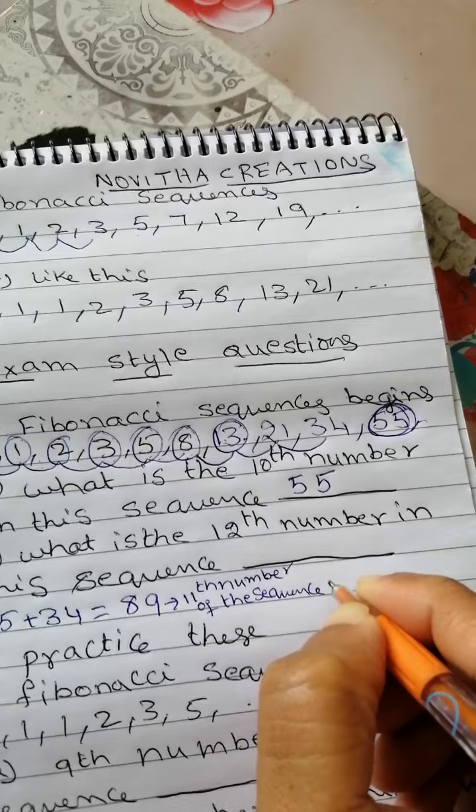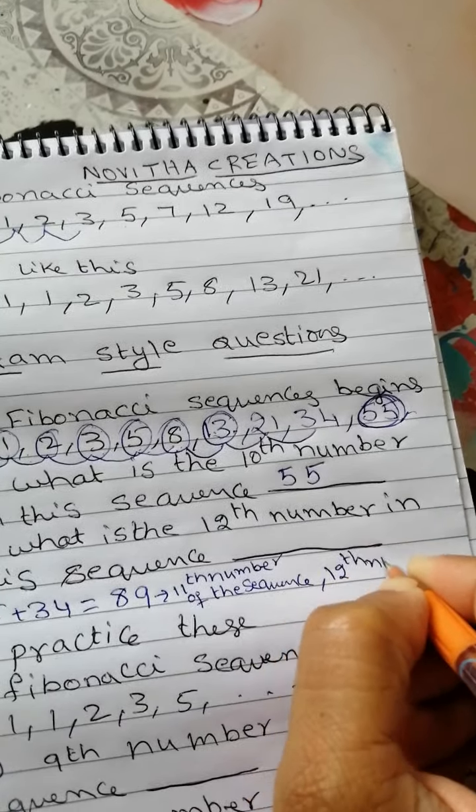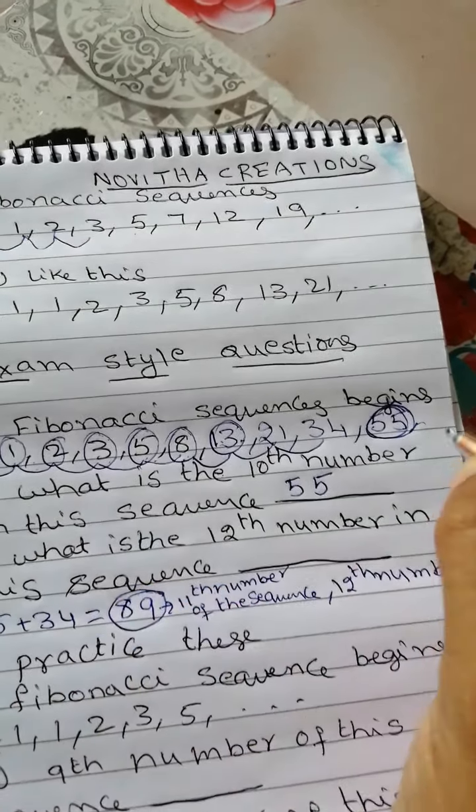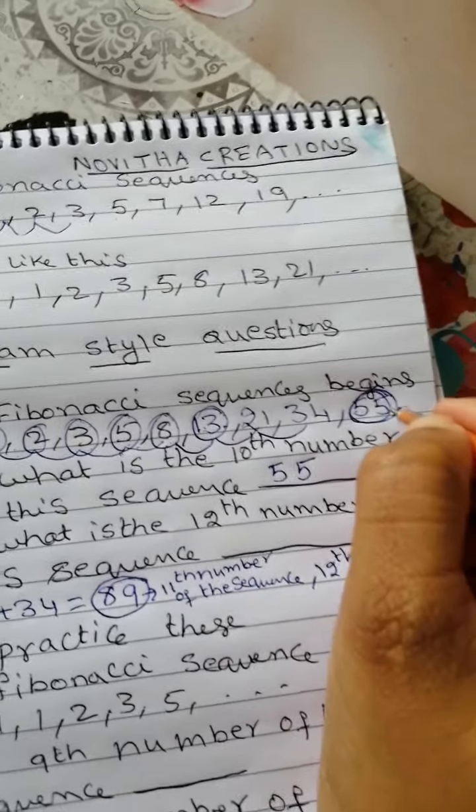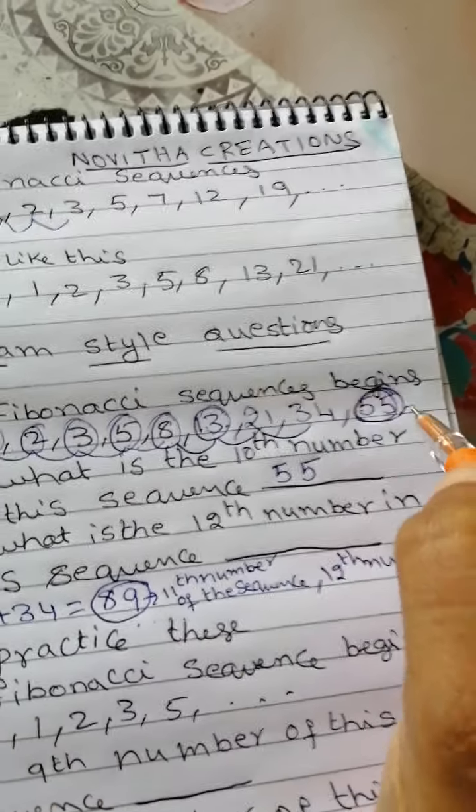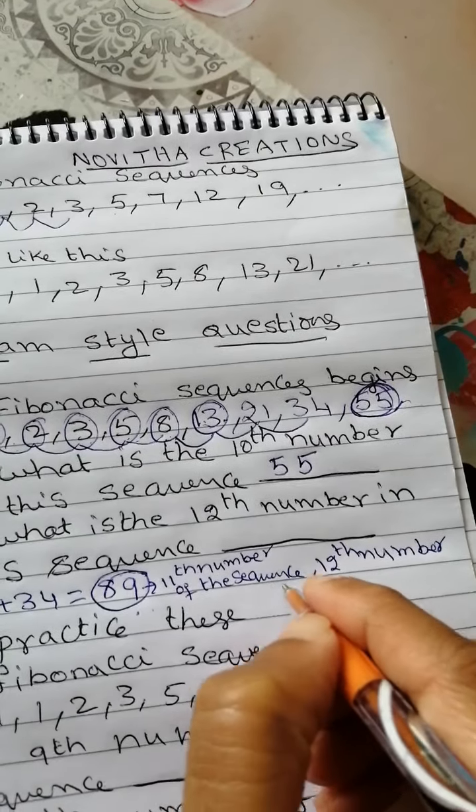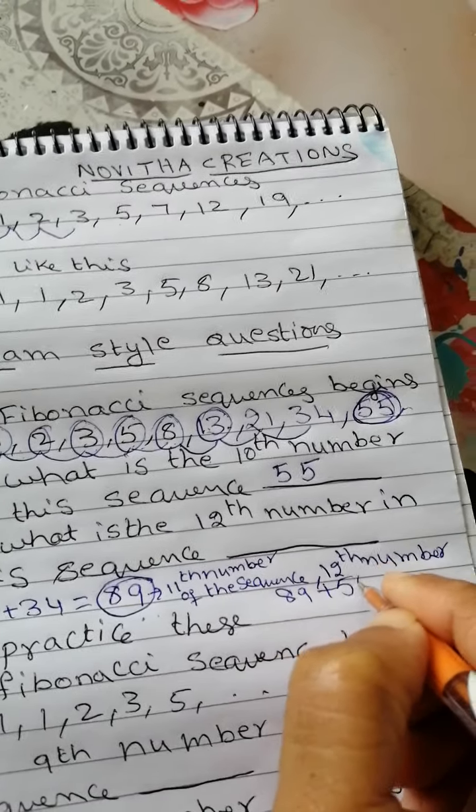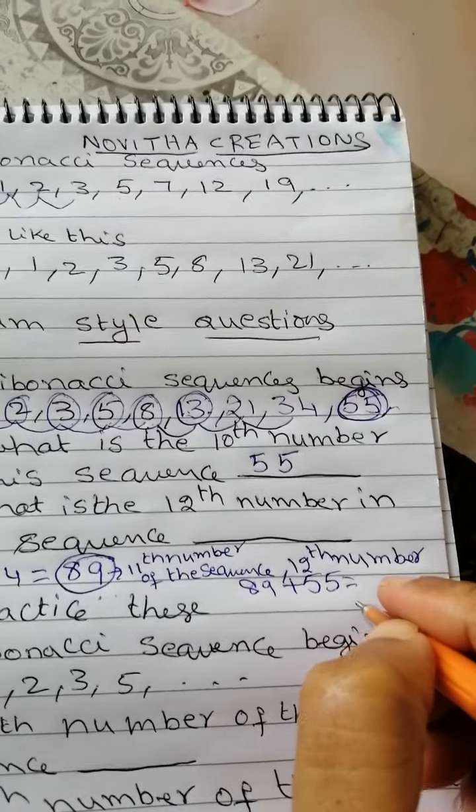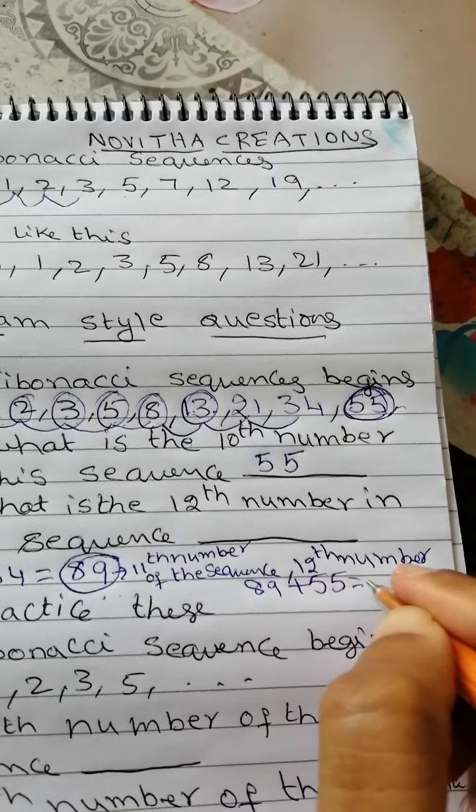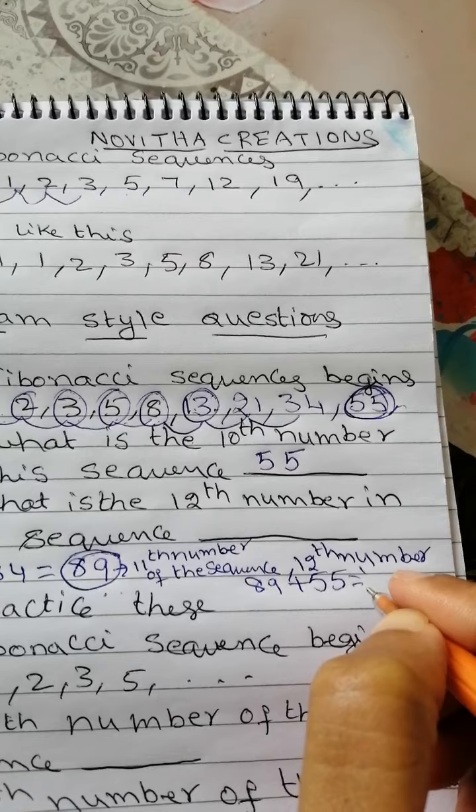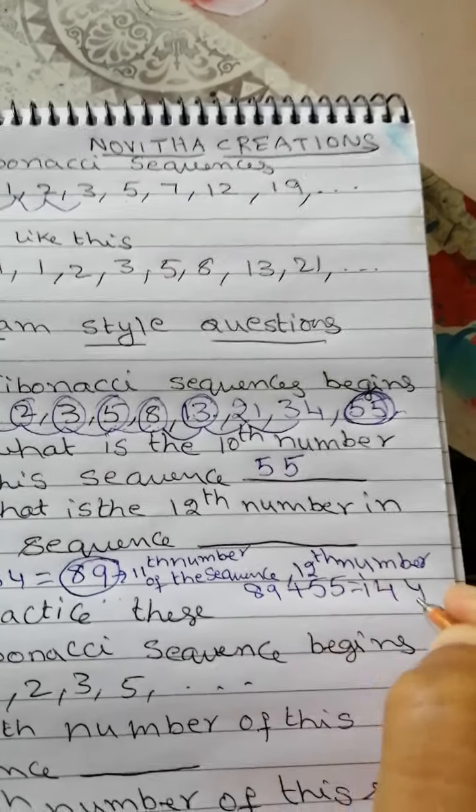We need to find the 12th number of the sequence. To find the 12th number of the sequence, we need to add 89 and 55. Because 89 is the 11th number of the sequence and 55 is the 10th number of the sequence. So when you add, 144. So 12th number of the sequence is 144.